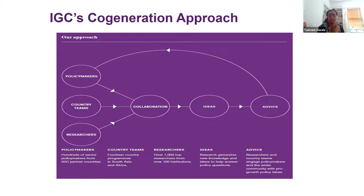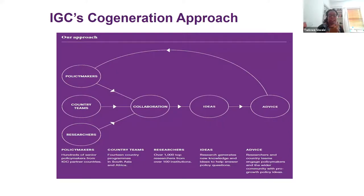My name is Twigwe Siwale. I'm currently a policy economist at the IGC London Hub and previously a country economist, spending a number of years working in Zambia. When IGC talks about its cogeneration approach, we view research as a very collaborative thing involving three teams: policymakers, country teams, and researchers or PIs. We view policymakers not only as decision makers and implementers of policies, but as knowledge creators — integral to research design, execution, and eventually implementation of research.